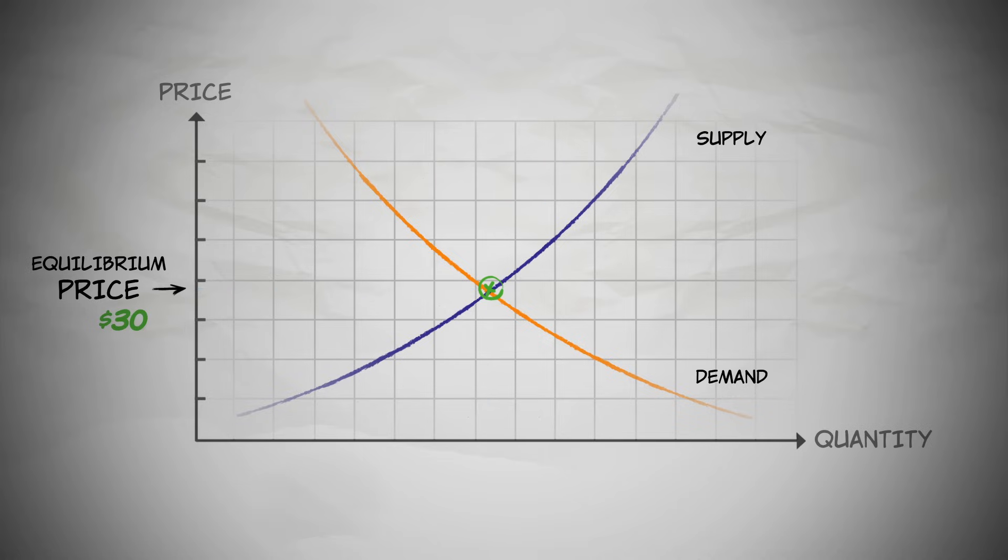At any price other than the equilibrium price, the incentives of the buyers and sellers push the price towards the equilibrium price. Only the equilibrium price is stable.